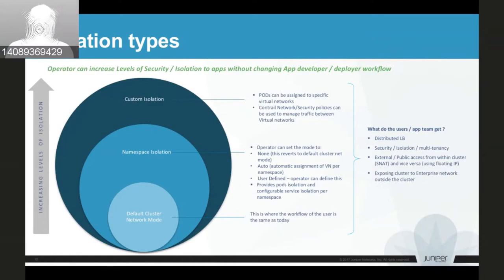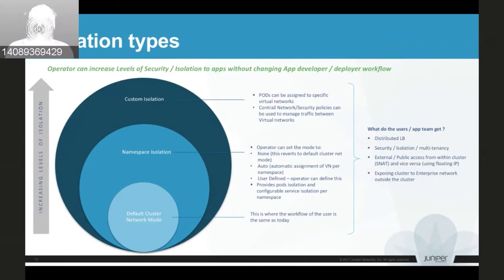We provide ECMP load balancing between all pods — totally software-defined and automated. We provide all security policies, external access via SNAT or floating IP allocation, and integration from the control plane to external gateways using protocols like BGP. All virtual networking configuration in your cluster can be automatically announced and all prefixes advertised and propagated using BGP to your VRFs and MPLS VPNs to get out of the cluster.